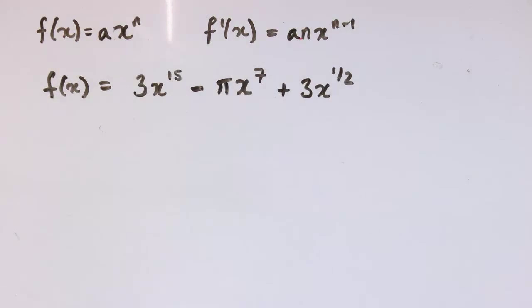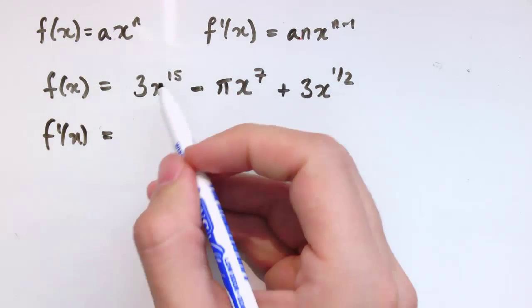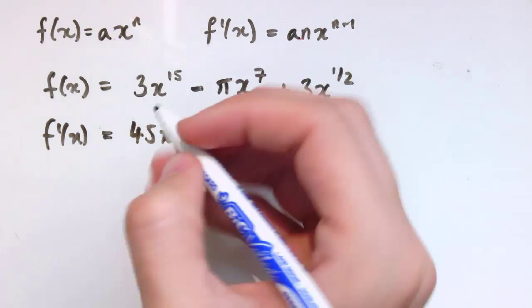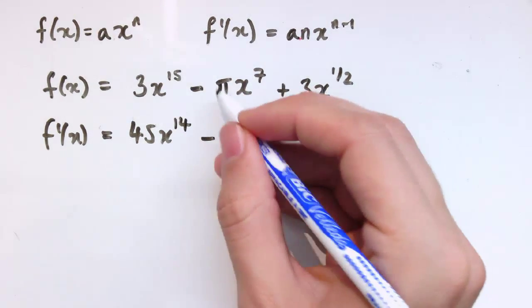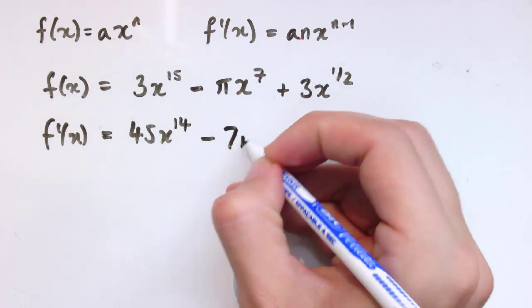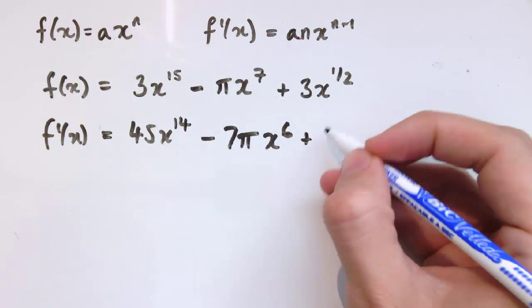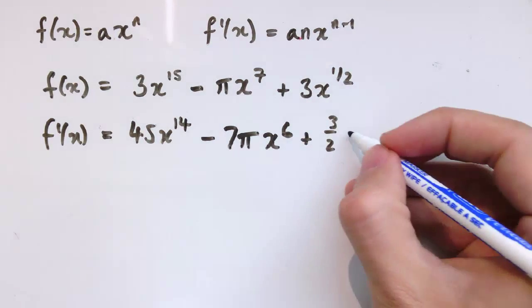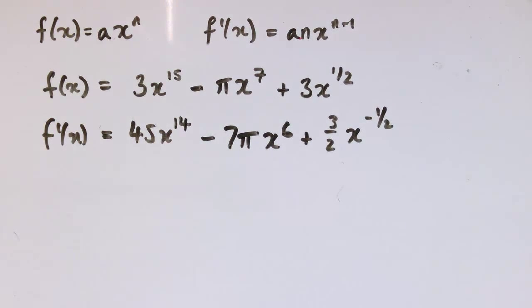Here's another one. So, here I've got to differentiate 3x to the 15, so 15 times 3 is 45, x to the 15 minus 1, so 14. Don't be put off by the π here, it's just a number, so 7 times π times x to the 6, and again, a half times 3, so that's 3 over 2, or 1 and a half, x to the 1 half minus 1, so x to the minus 1 half. And as you do more of these, get the hang of them, it becomes pretty quick and routine. We just multiply by the power and reduce the power by 1, and we can just add and subtract successive terms.